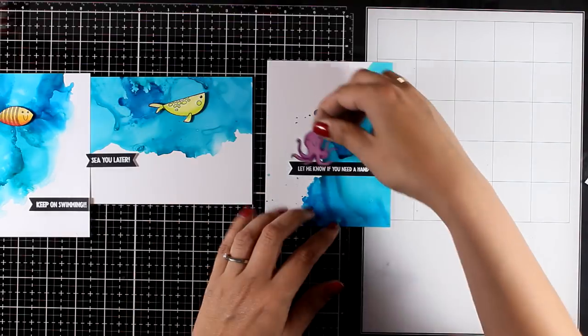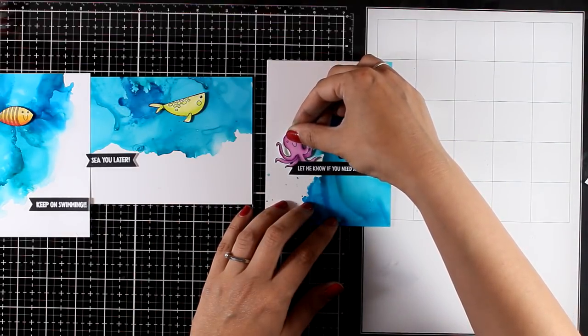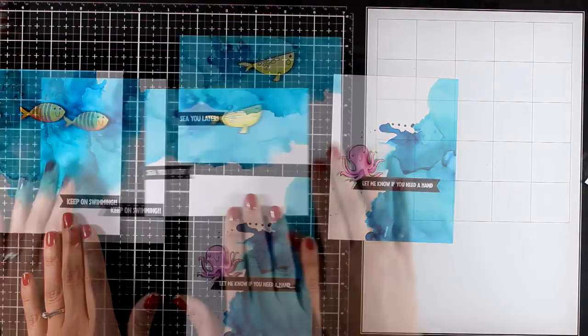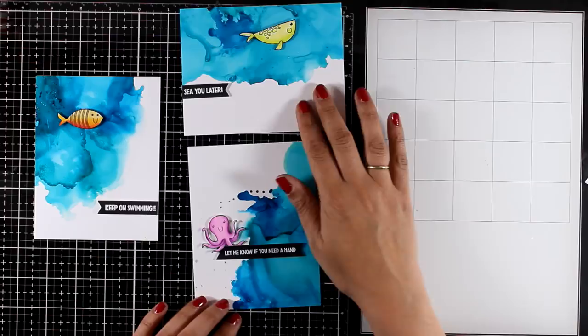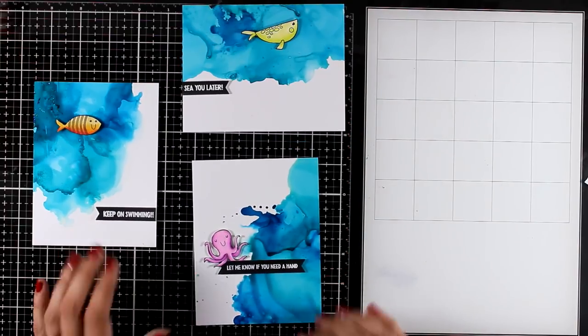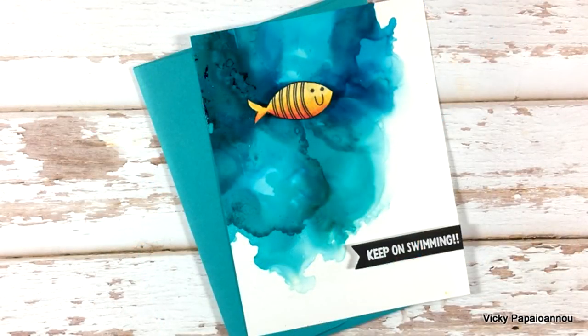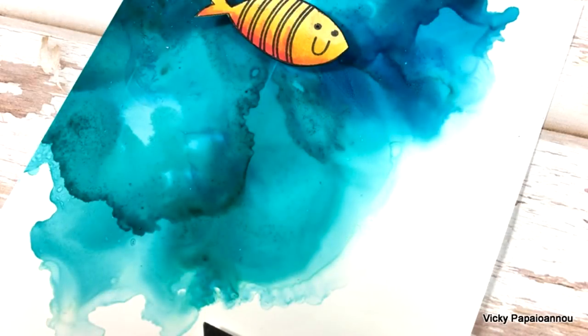I hope I have inspired you today to play with your alcohol inks, create beautiful and easy backgrounds that you can then turn into quick and easy cards. Here are some close-up photos of the cards that I made today. Don't forget that you can find a full list of all the supplies that I used down below in the description area as well as on my blog. Thank you all so much for watching and have a lovely day.